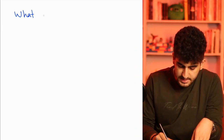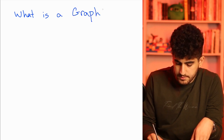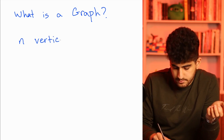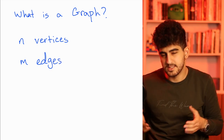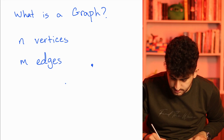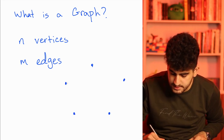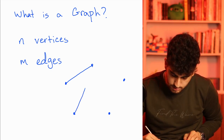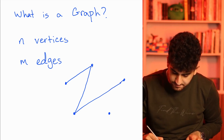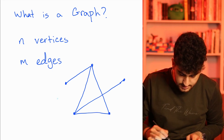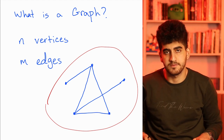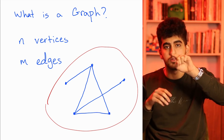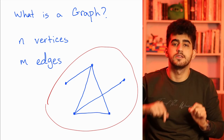First we need to discuss what is a graph. A graph is a structure that consists of N vertices and M edges. Vertices are like points, and edges are like lines between them. Each edge connects two of these points, a.k.a. vertices. This is an instance of a graph. A graph consists of N vertices and M edges — vertices are the points and edges are the lines between two of the points.